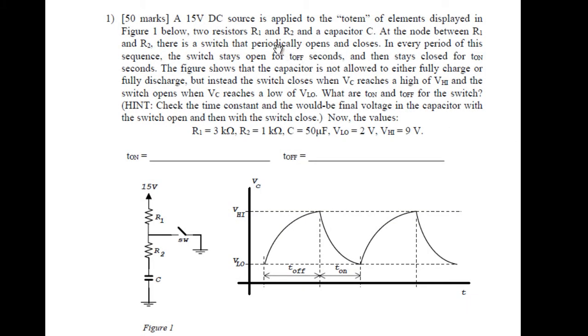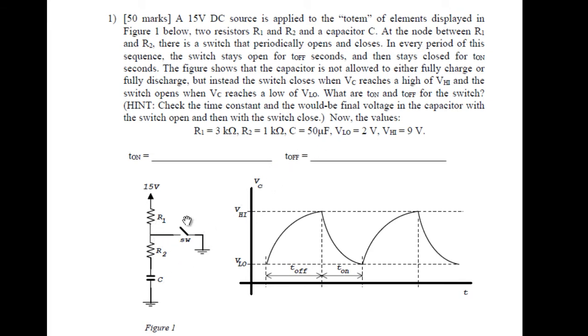Let's read the question. A 15V DC source is applied to the totem of elements displayed in Figure 1 below: two resistors R1 and R2, 3 kΩ and 1 kΩ, and the capacitor C of 50μF. At the node between R1 and R2, there is a switch that periodically opens and closes. In every period of this sequence, the switch stays open for T-OFF seconds, as shown,